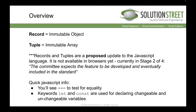Some quick JavaScript info for people less familiar: you'll see triple equals in code samples, which is a test for equality. You'll also see keywords 'let' and 'const' used for declaring changeable and unchangeable variables in the newer version of JavaScript.